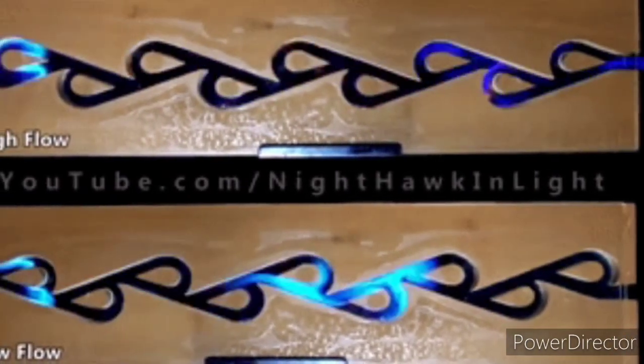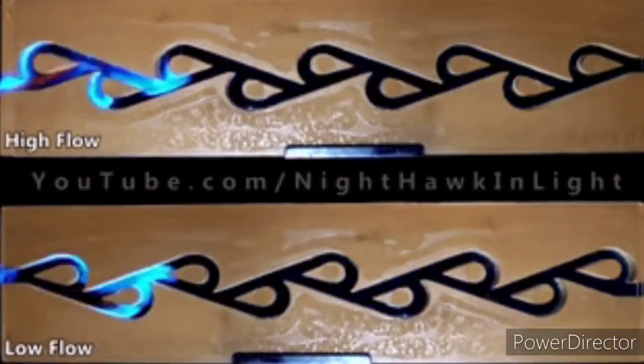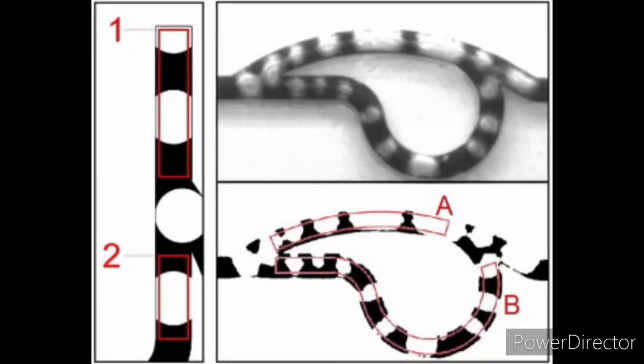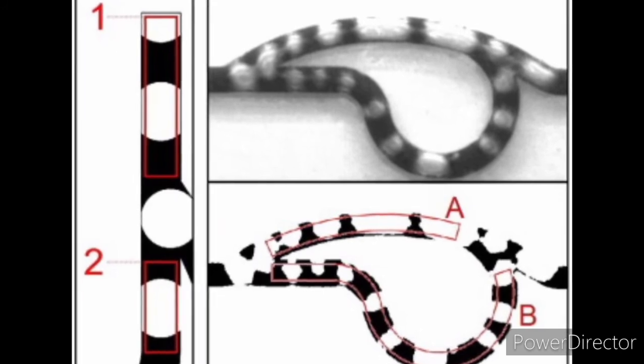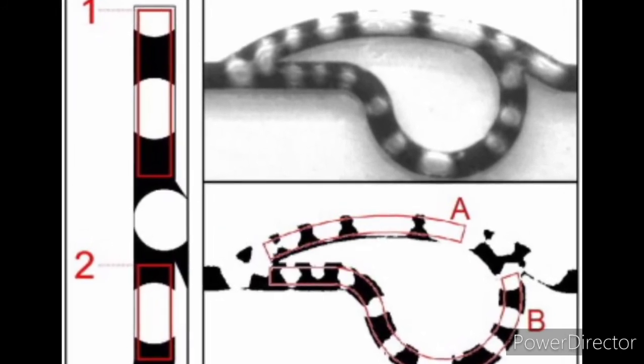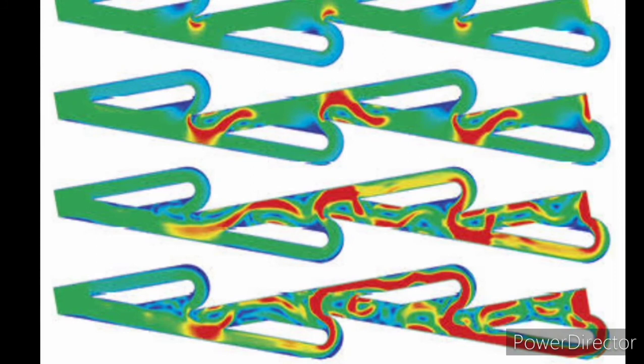The Tesla valve is used in microfluidic applications and offers advantages such as scalability, durability, and ease of fabrication in a variety of materials.